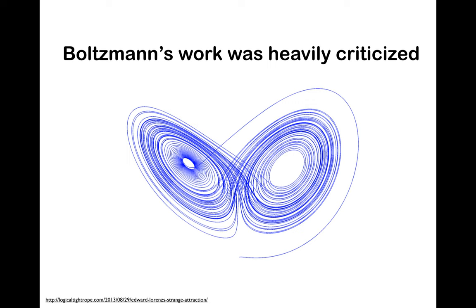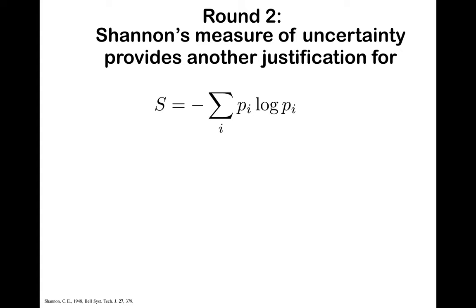Needless to say, Boltzmann was very heavily criticized for this work, in particular because he ignored the explicit dynamics of the particles. Fast forward to the late 1940s — round two. When something is as fundamental as using the principle of maximum entropy to select the most probable model, there usually are a number of ways of justifying this principle. Shannon proposed a very different way for justifying the principle of maximum entropy.